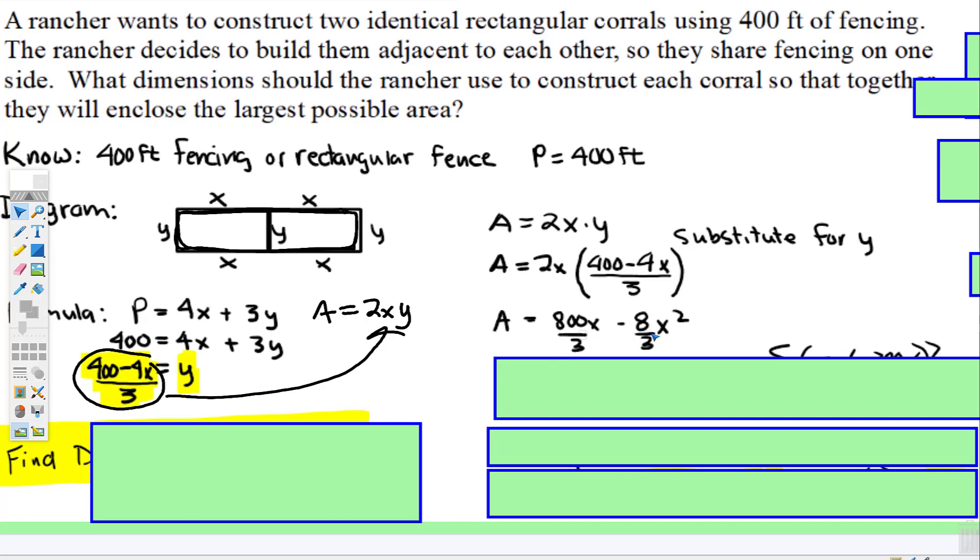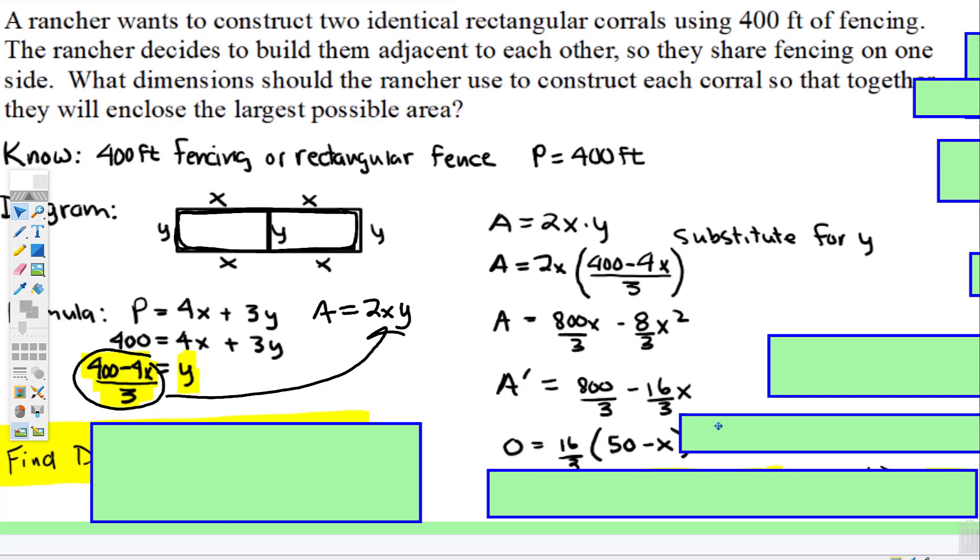So, we're going to take the derivative of this now. And now we're going to set A prime, we're going to set the derivative equal to 0. And when we do that, we're going to factor things out. Well, I checked to see if 800 thirds is divisible by 16 thirds, and it is. This times 50 is 800 thirds, so then we know what our x is equal to.